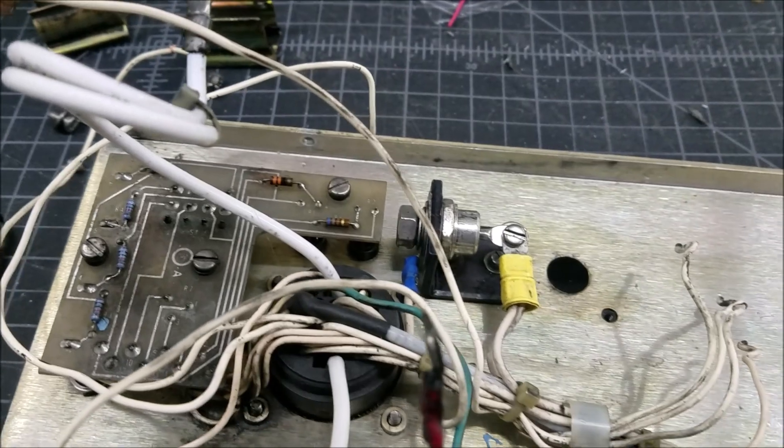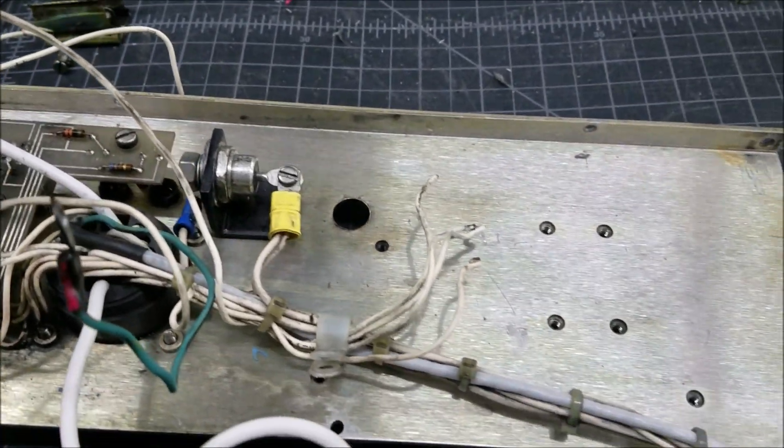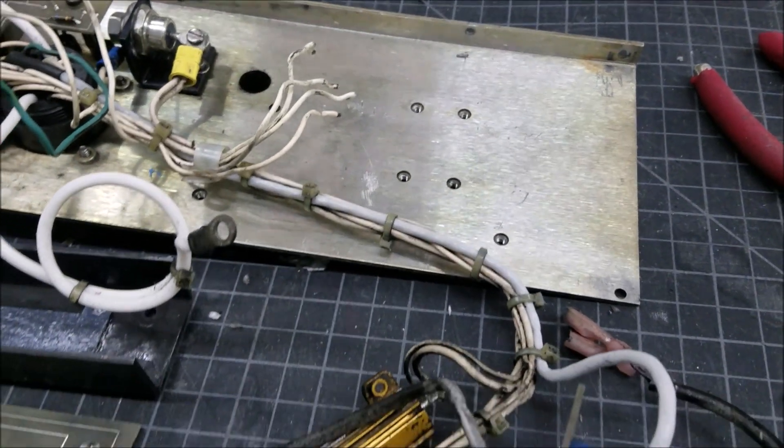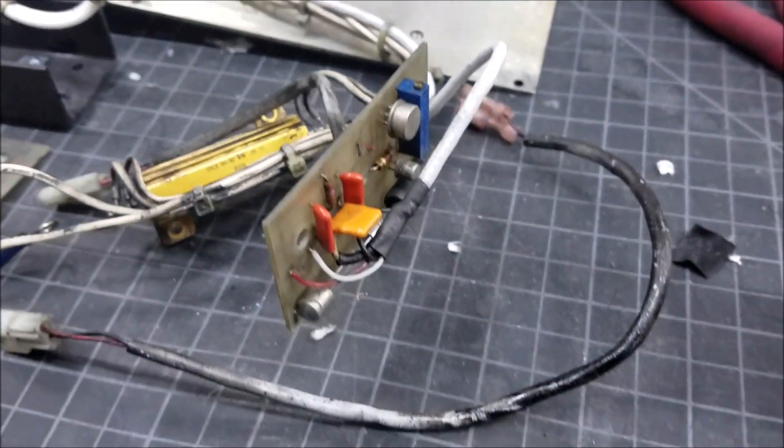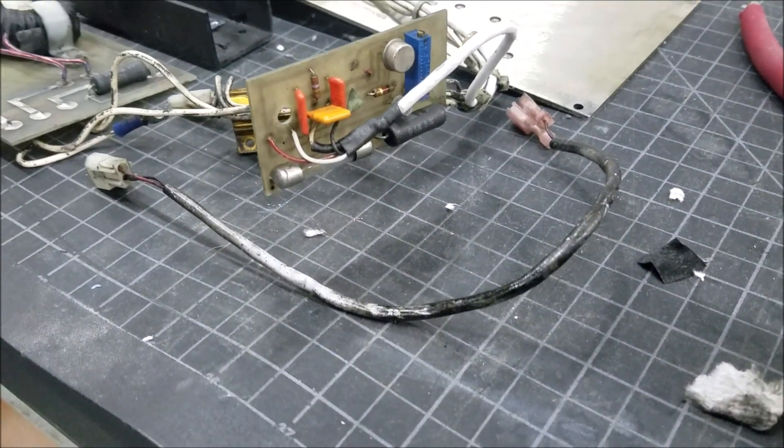At this point, many of the boards, wires, and electronic parts are a lot cleaner than they were before. This was accomplished by using isopropyl alcohol and acetone. However, lots of cleaning still needs to be done.